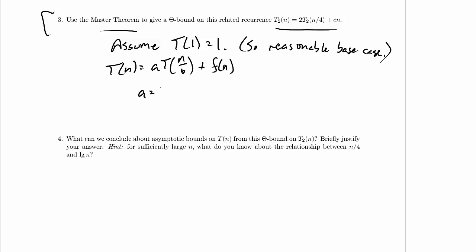So in this case we have a equal to 2, b equal to 4, and f(n) equal to c times n. By the way, it doesn't matter that it's T2 rather than T. That's just like renaming a variable, renaming the function. Big deal.